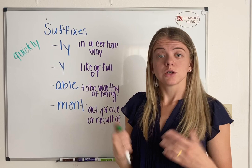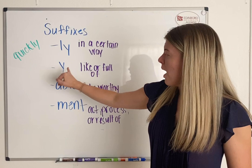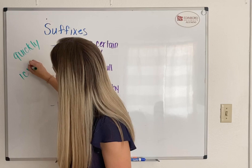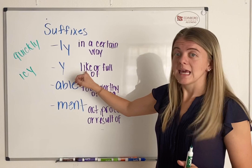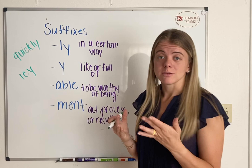So if he were to run slowly, that means he ran slow. Y means 'like or full of.' My example word for Y is 'icy.' If I have something that's icy, that means it's like ice or full of ice. If it's windy outside, that means outside is full of wind.